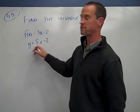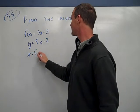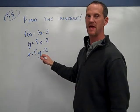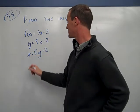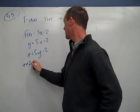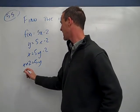And we swap them around, x equals 5y minus 2. And then I solve for y, so I add 2 to both sides, and then I divide both sides by 5.